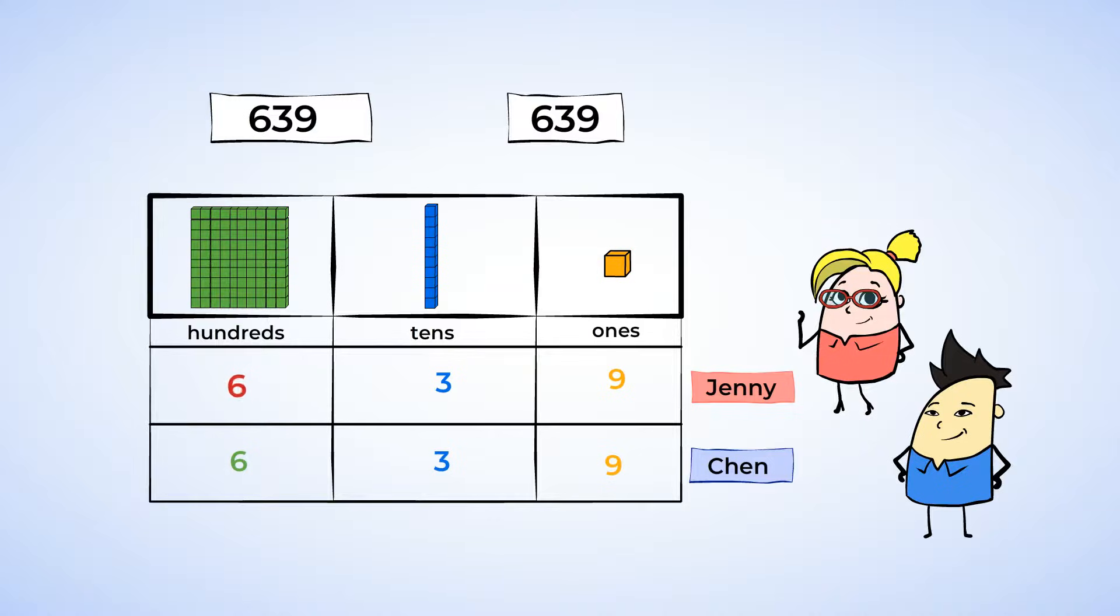Jenny's score has a 6 in the hundreds place, and so does Chen's. On to the tens place then. Jenny's score has a 3 in the tens place, and Chen's score also has a 3 in the tens place. So we're gonna have to look at the ones place now. Jenny's score has a 9 in the ones place. Chen's score has a 9 in the ones place as well.